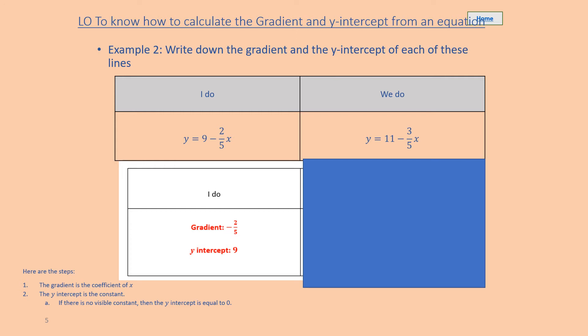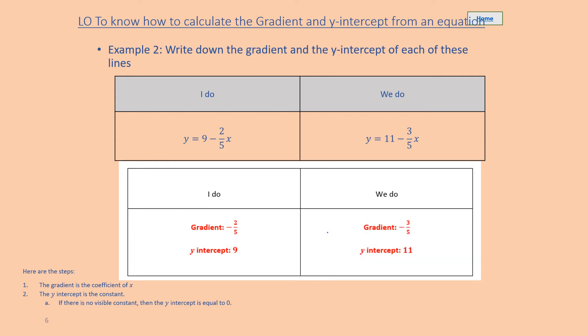Pause the video while you have a go at the we do. That's correct — the gradient is minus three-fifths, and the y-intercept — the constant — is 11.